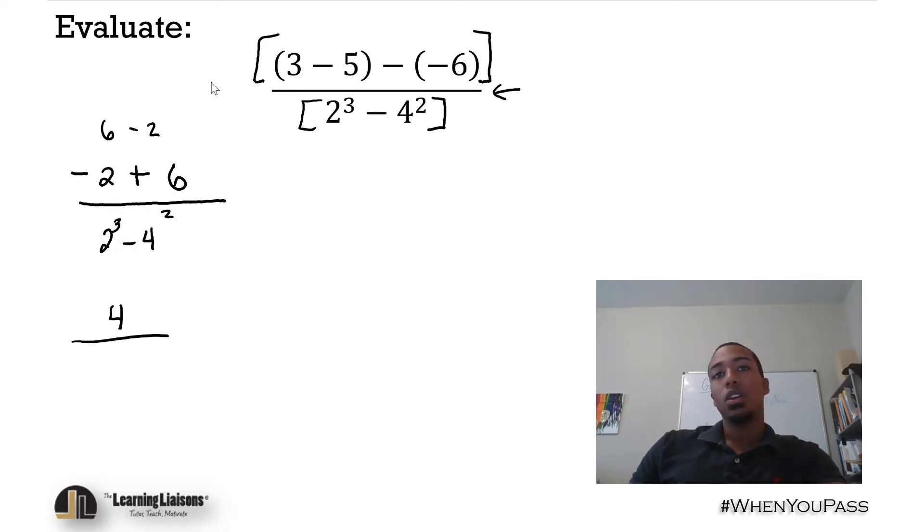What's 2 cubed? An exponent means you're multiplying that base number by itself that many times. So 2 cubed would be 2 times 2 times 2, which is 4 times 2, which is 8. 4 squared is like saying 4 times itself twice, so 4 times 4, and that's 16.